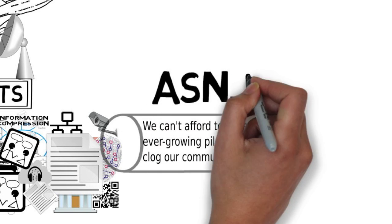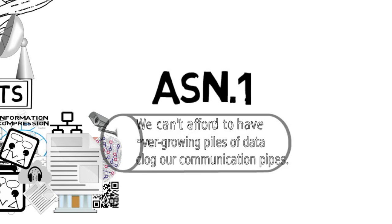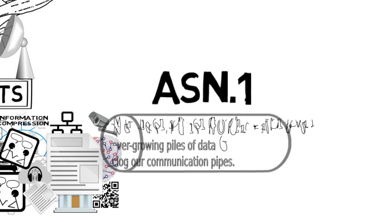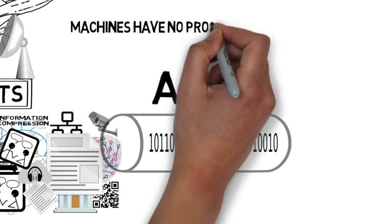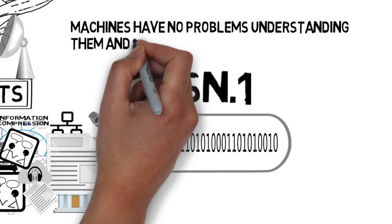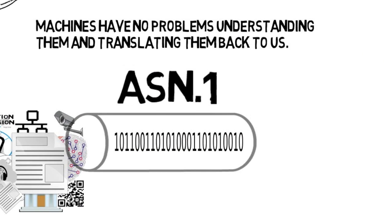ASN-1 is capable of expressing data in binary format, which makes it many times shorter than the equivalent human-readable documents. Although humans can't easily make sense out of these compressed information nuggets, machines have no problems understanding them and translating them back to us.